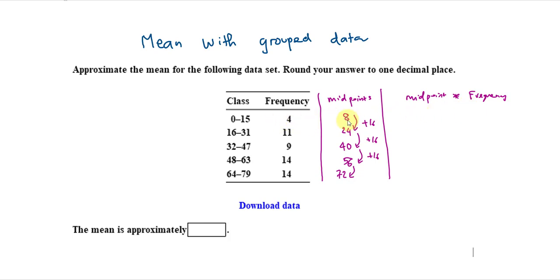So, 8 times 4 is 32. And then, the next one is 11 times 24, which gives 264. And then, doing the same thing, you should get these values.